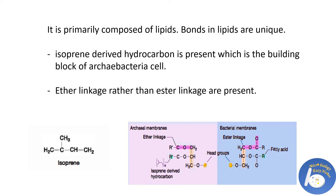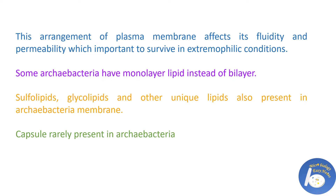Another distinctive feature of the archaebacterial cell is its plasma membrane, primarily composed of lipids with unique bonding. Isoprene-derived hydrocarbons are the building blocks. Ether linkages — rather than ester linkages — are present, and these ether linkages are more resistant to chemical attack and heat. This affects membrane fluidity and permeability, important for survival in extremophilic conditions. Some archaebacteria have a monolayer lipid arrangement instead of a bilayer.